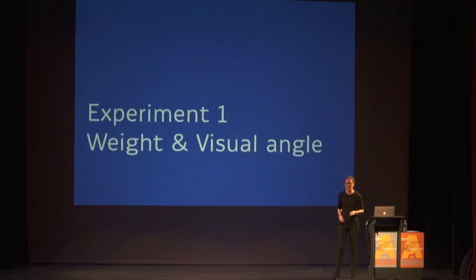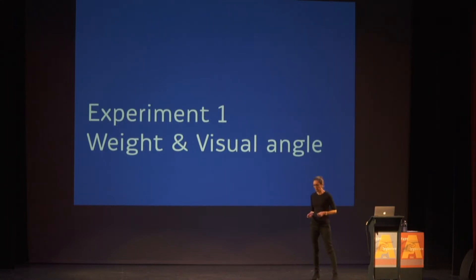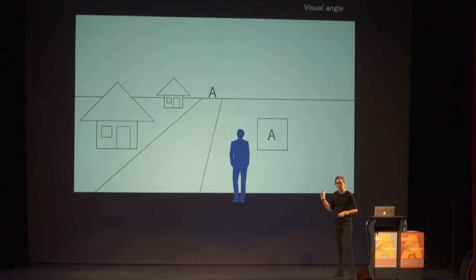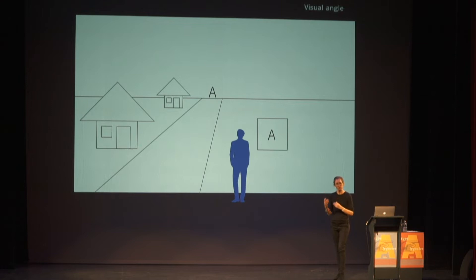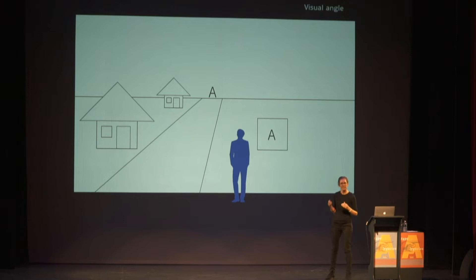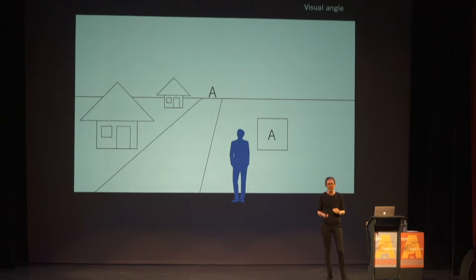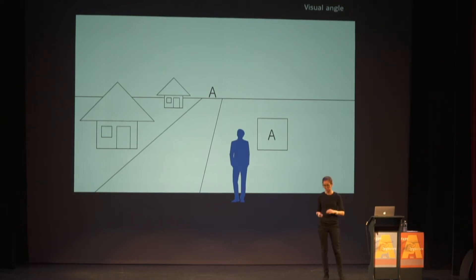The first experiment has to do with weight and visual angle. If we look at this image, on the top we have a large A that is viewed from a great distance, and at the bottom we have a smaller A viewed from up close. To the observer, these two A's are actually seen as the same visual angle. Small visual angles are the ones that appear to be small in size.